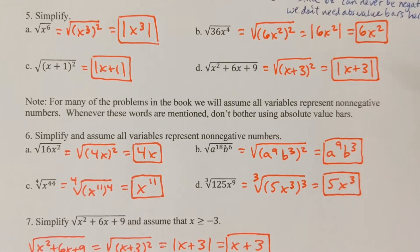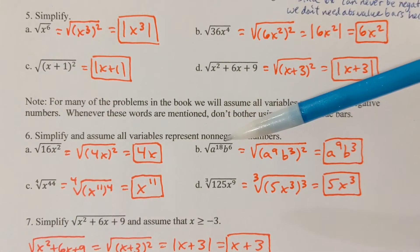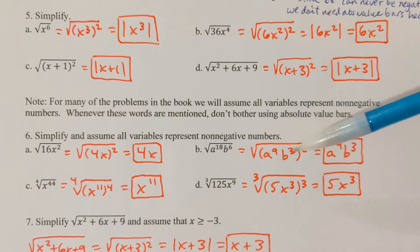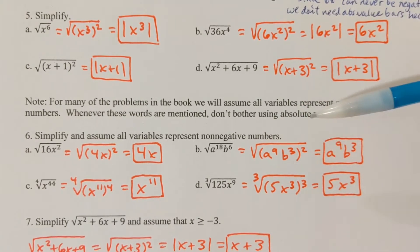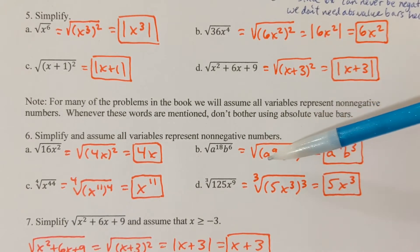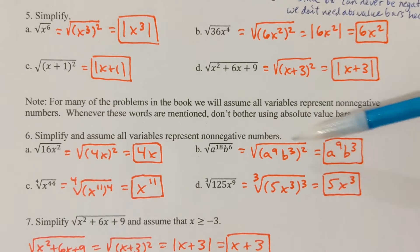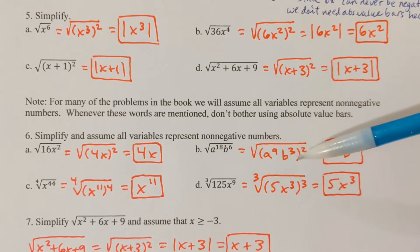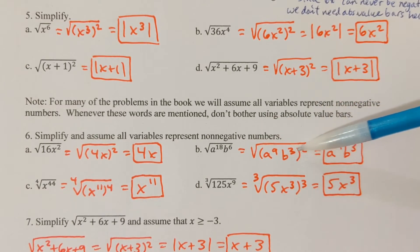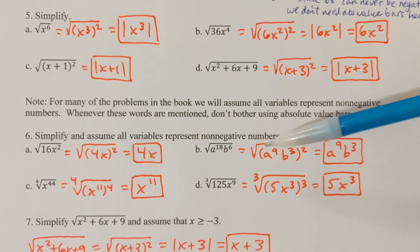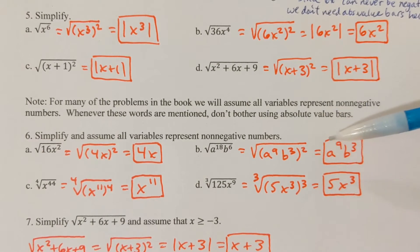Here's part B: the square root of a to the 18th times b to the 6th. I want to rewrite the radicand as something squared so that the radical and the power of 2 will go away. a to the 9th squared gives a to the 18th, and b cubed squared gives b to the 6th. So the square root and the power of 2 go away, leaving me with just a to the 9th b cubed.